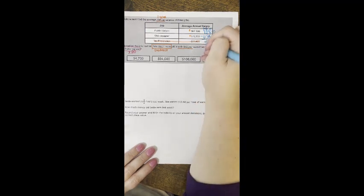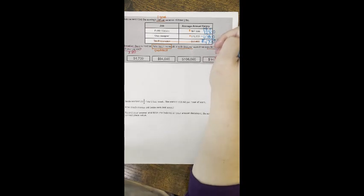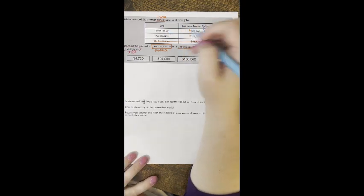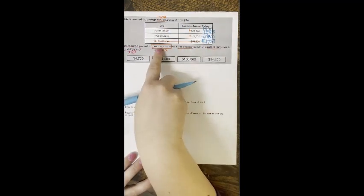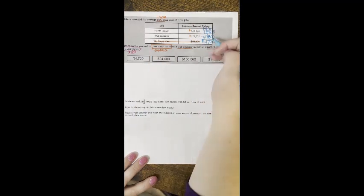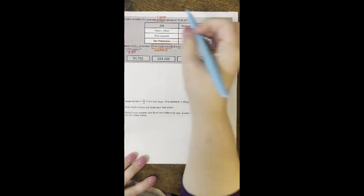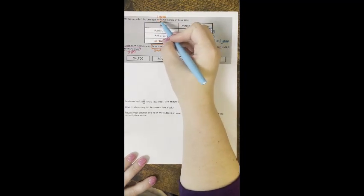And then 6 minus 6 is 0. So in one year a web designer will make $4,700 more than a public liaison. That was our subtraction, that was our 'how much more.' They will make $4,700 more in one year.